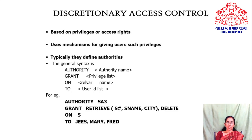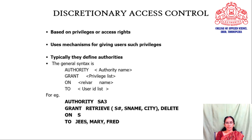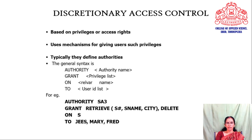Authorities define the privileges and their general syntax is: authority followed by an authority name, then the keyword grant, then a privilege list, then 'on' indicating which object the privileges are set for, and 'to' indicating the user list to whom the privileges are granted. For example: authority SA3 grant retrieve on S#, S_name, city; delete on S to G's, Mary and Fred. This means authority SA3 provides the retrieve privilege on columns S#, S_name, and city, and delete privilege on relation S, all granted to users G's, Mary, and Fred.